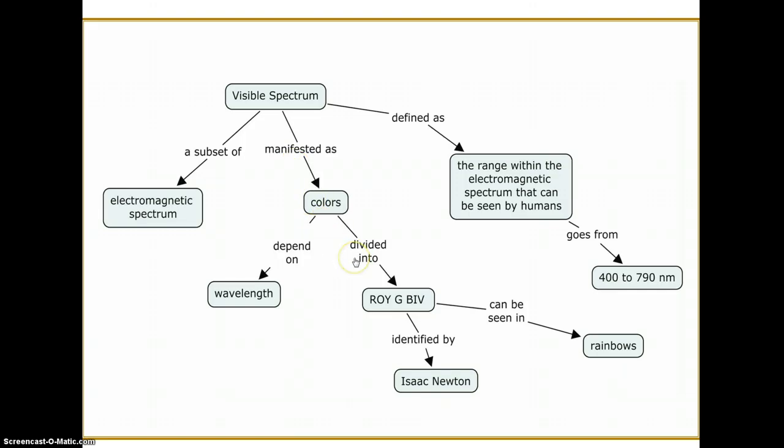Colors can be divided into red, orange, yellow, green, blue, indigo, violet. So the idea is that we generate the concepts, organize them, link them together, and then identify what those relationships are for each of those links.